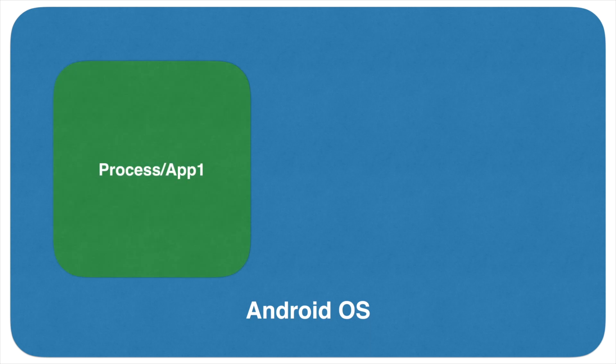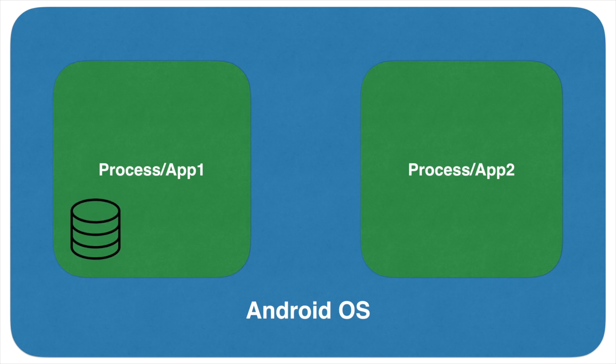As you are aware, in a typical Android operating system, each app is hosted in a separate process. Each process might be having its own data — App1 could be having its own database.